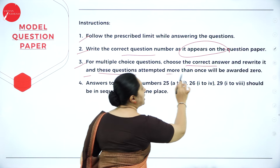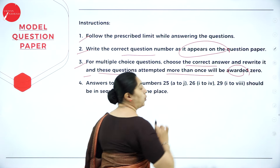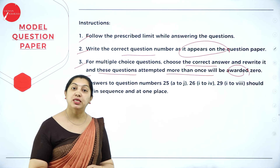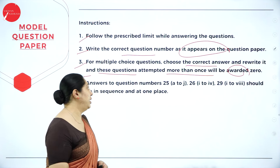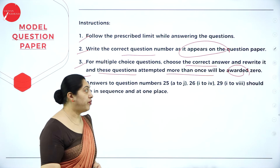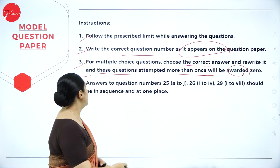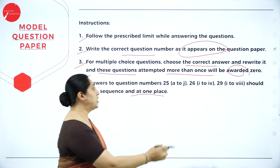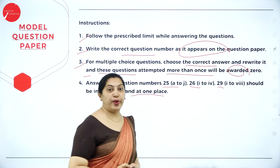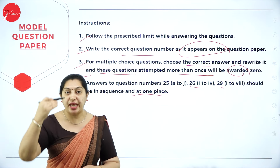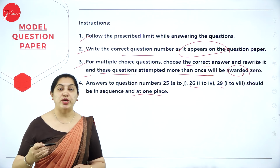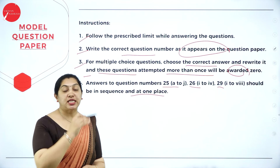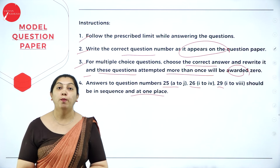MCQs attempted more than once will be awarded zero — no marks will be given. Also, answers to question numbers 25, 26, and 29 should be in sequence at one place. For question number 25, there are 10 sub-questions, and all 10 should be answered in sequence. The same applies to 26 and 29. These are the instructions you must follow during your board exam.